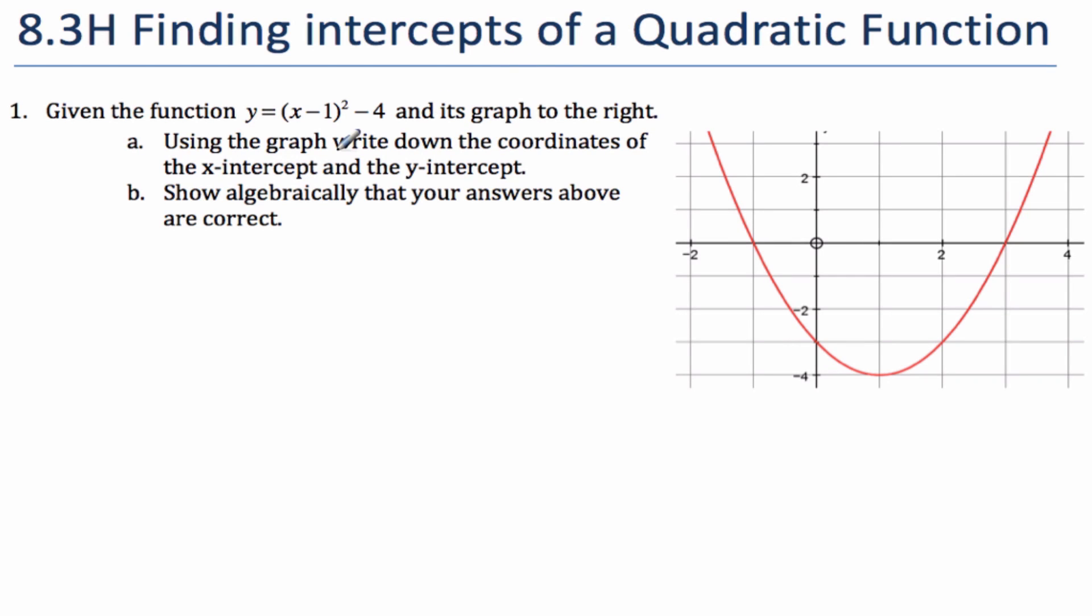We're going to use the graph here to find the x-intercepts and the y-intercepts. I know that from this form of the equation, this is going to tell me my vertex. It goes opposite positive 1 and down 4. There's my vertex.